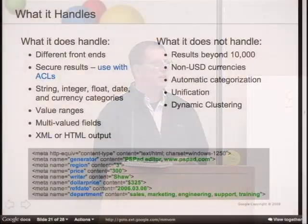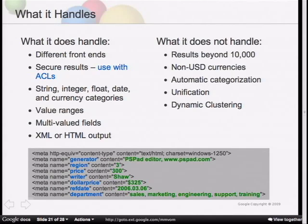We support string, integer, float, date, and currency category lookups. Currently the currency category only works with dollar-based currency — it will give you automatic range detection. If you have other currencies, you can set it up as a string-based category, but you'll have to set up those range values yourself.